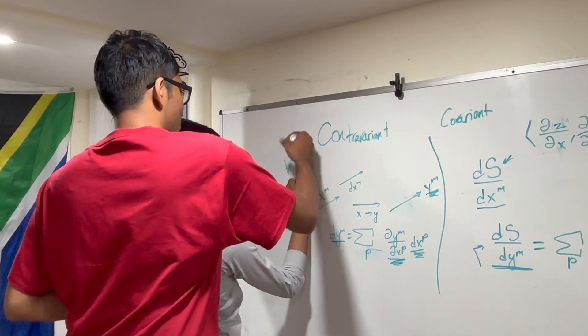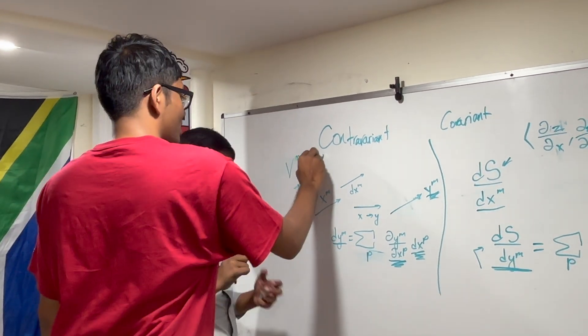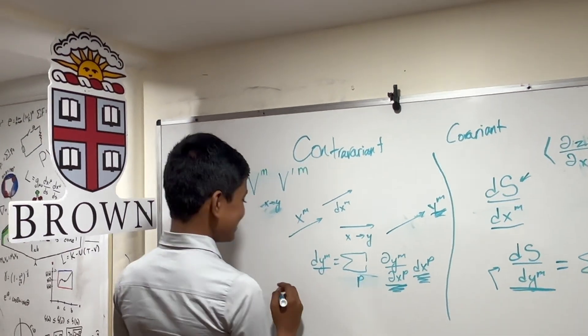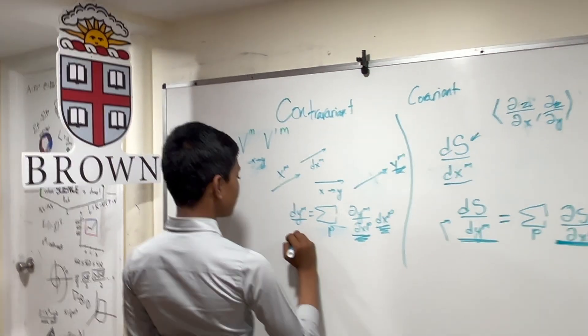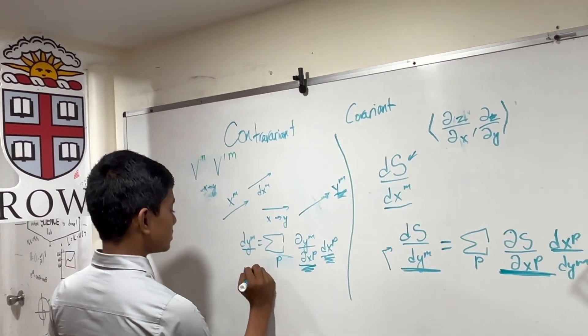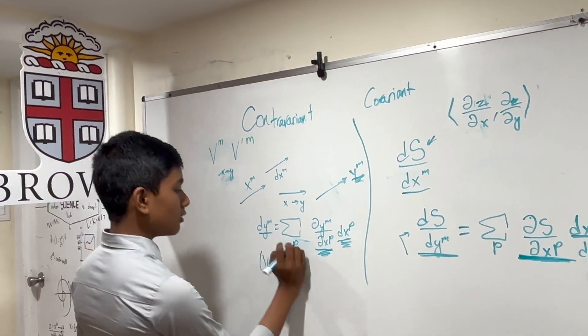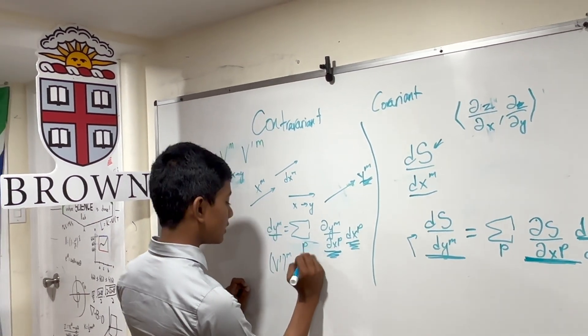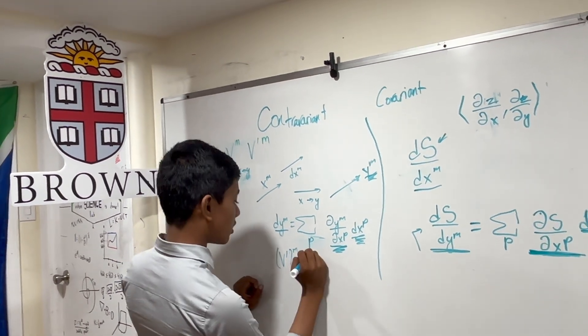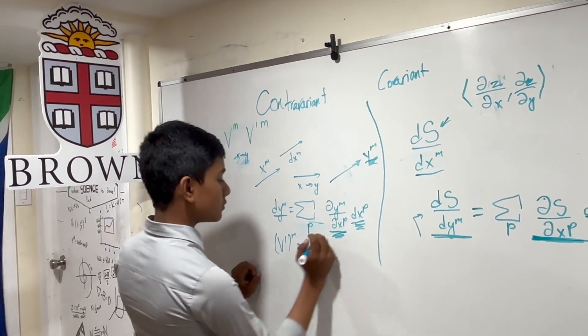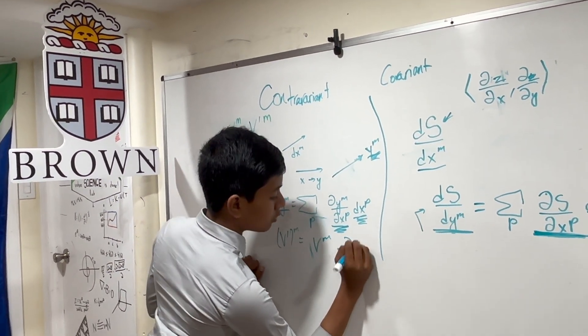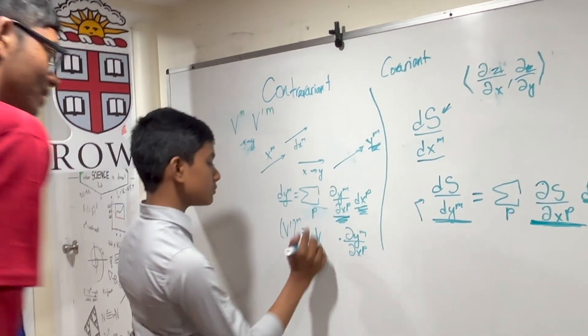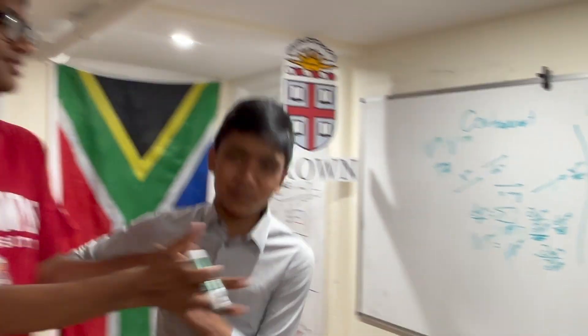These are the components of our tensor v in the old coordinate frame, and this is in the new frame. So we get, in general, v'^m is equivalent to the summation, and we're going to remove the Einstein summation notation. So all we have here, just the old contravariant, v^p times partial y^m partial x^p.